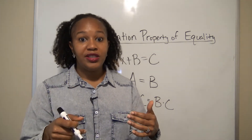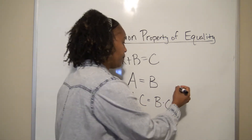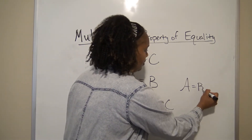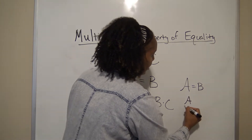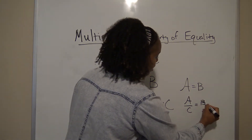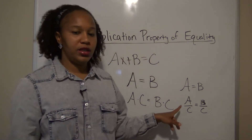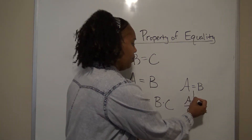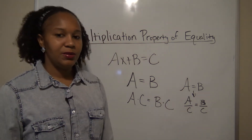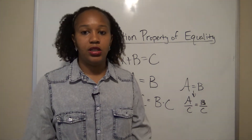Because division is the same as multiplication — division is really multiplying by a fraction — this also applies to division. So if you have a equals b, then you can divide both sides by c and that's still an equivalent expression. I can divide both sides by c as long as c is the same, and that doesn't change the equivalency of the statement.